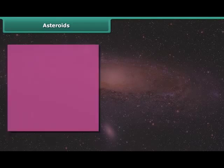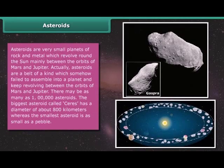Asteroids are very small planets of rock and metal which revolve around the Sun mainly between the orbits of Mars and Jupiter. Actually, asteroids are a belt of a kind which somehow failed to assemble into a planet and keep revolving between the orbits of Mars and Jupiter. There may be as many as one lakh asteroids. The biggest asteroid called Ceres has a diameter of about 800 kilometers whereas the smallest asteroid is as small as a pebble.